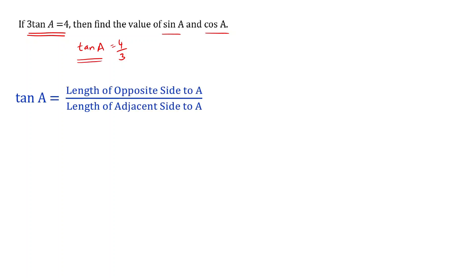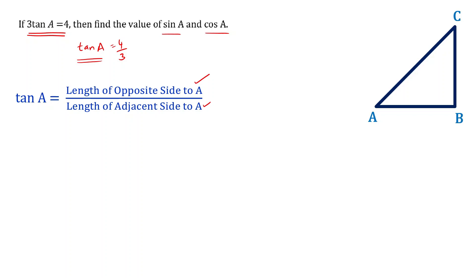Tan A is defined as the length of the opposite side to angle A divided by the length of the adjacent side to angle A. Let's draw a right-angle triangle. In this, angle A is defined as an acute angle — it is less than 90 degrees.